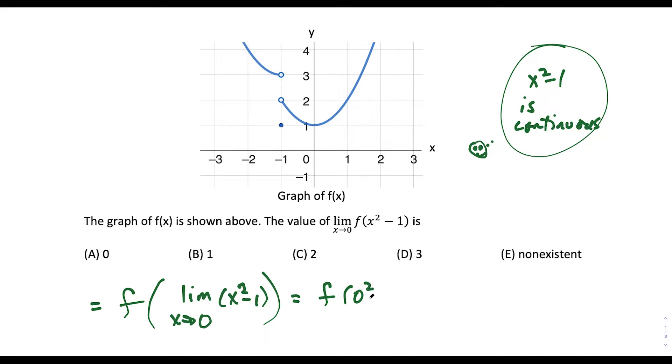we're going to have 0 squared minus 1, which would give us f of negative 1. And they look at this and say f of negative 1 is equal to 1, so they say this is choice B.